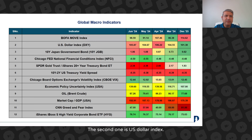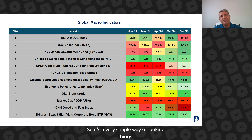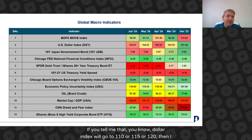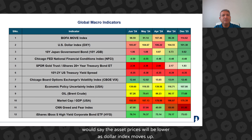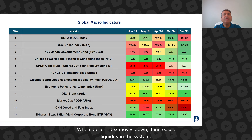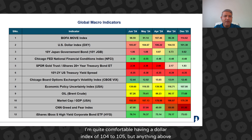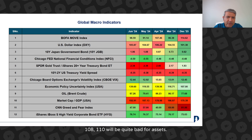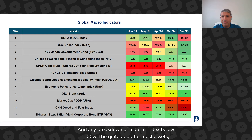The second one is the US Dollar Index. Everybody would know the dollar index. Higher the dollar, bad it is for asset classes. Lower the dollar, good it is for asset classes. If you tell me the dollar index will go to 110, 115, or 120, then asset prices will be lower as dollar index moves up. When dollar index moves down, it increases liquidity in the system and that liquidity goes to the asset classes. I'm quite comfortable having a dollar index of 104 to 105, but anything above 108 to 110 will be quite bad for assets. Any breakdown of the dollar index below 100 will be quite good for most assets, including emerging market assets.